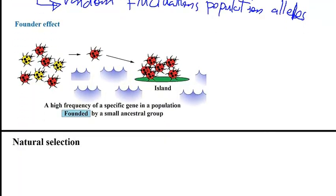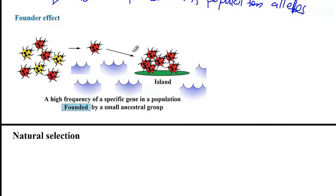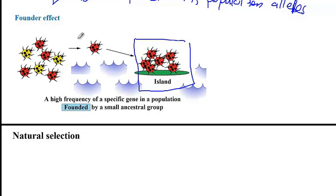The founder effect is an extreme example of genetic drift, where a new population starts to grow in a new environment beginning with a small number of individuals. This results in a huge loss of genetic variation. For example, if one ladybug is carried by wind to an island and starts a new population, all of those ladybugs would be red — different from the parental population. This illustrates a higher frequency of a specific gene in a population founded by a small ancestral group establishing themselves in a new environment.